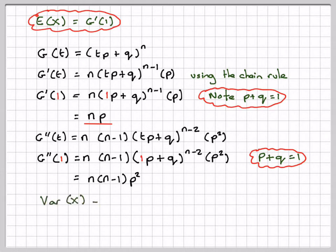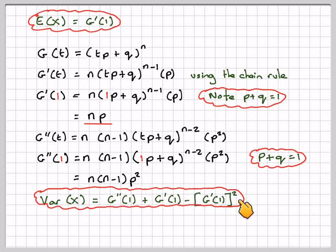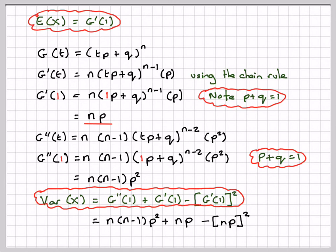The variance using the probability generating function is g''(1) plus g'(1) minus [g'(1)]². So that is g''(1), which is n(n-1)p², plus g'(1), which is np, minus [g'(1)]² which is (np)².